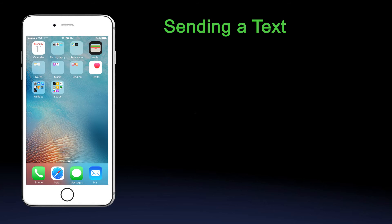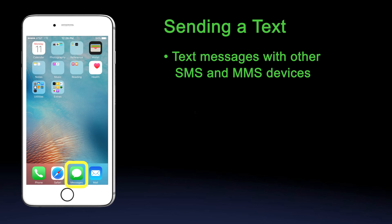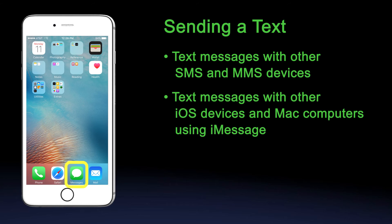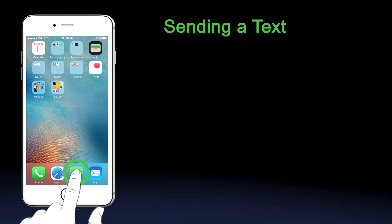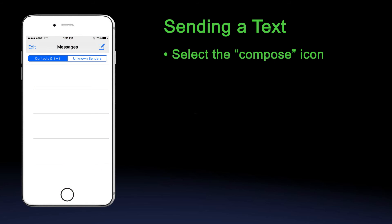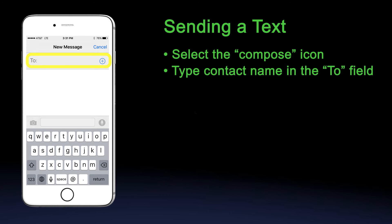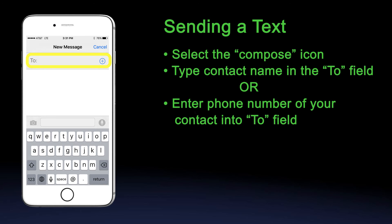Sending a text. Messages let you exchange text messages with other SMS and MMS devices using your cellular connection, and with other iOS devices and Mac computers using iMessage. To send a text, open the Messages icon on your screen and touch the Compose icon in the top right corner of the Messages app. Type your contact name in the To field — your iPhone will automatically pull up anyone in your Outlook address book. If their number is not in the CMS global directory, simply enter the mobile phone number of your contact to send a message.